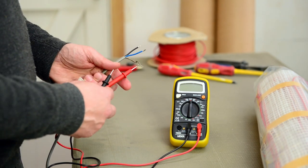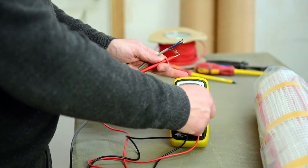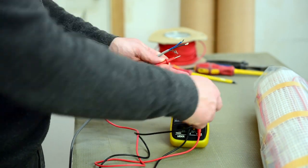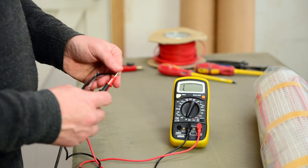Before you install your mat or cable system, you need to do a resistance reading. Set the electric meter to 2000 ohms and first check across the live.